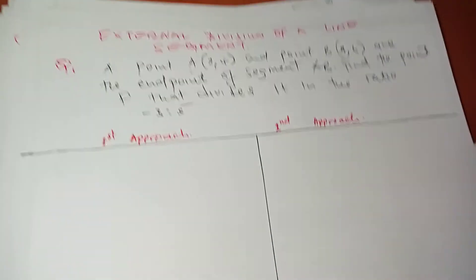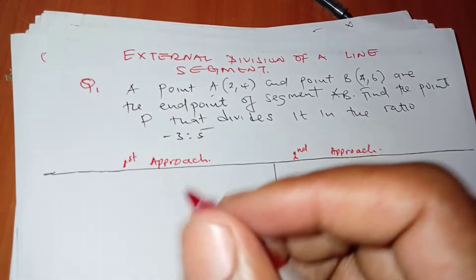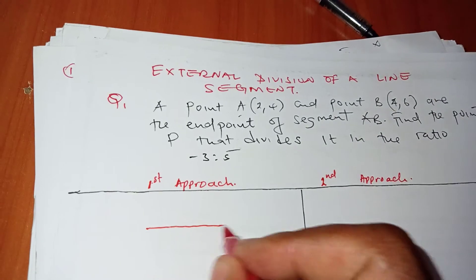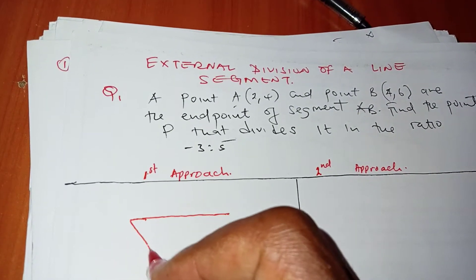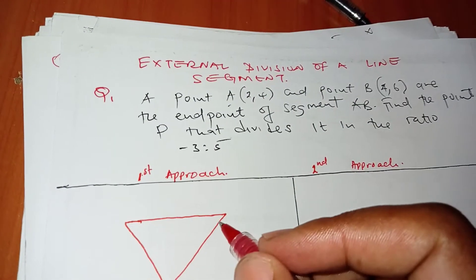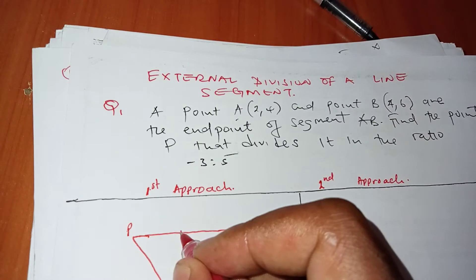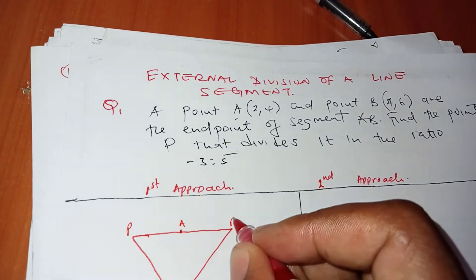The first approach here, you're going to invoke the ratio theorem. Let's get started. Allow me to make a sketch here very quickly. I know point P divides line AB externally, so point P is outside. This is my A, that's my B.